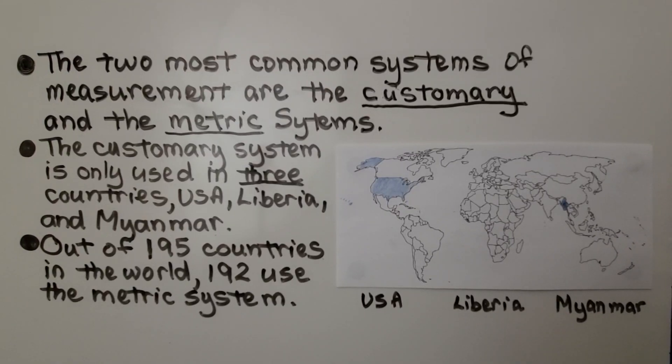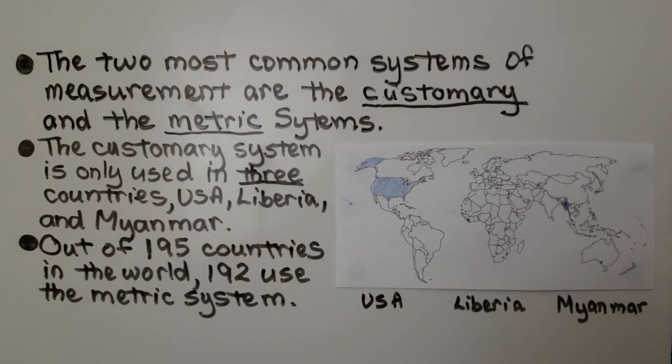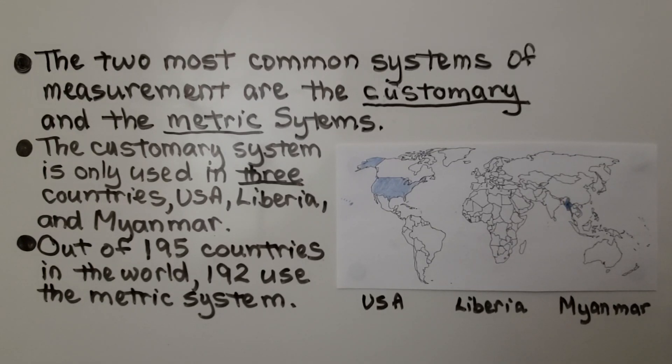Did you know that the two most common systems of measurement are the customary and the metric? And did you know the customary system is only used in three countries: USA, Liberia, and Myanmar? Out of 195 countries in the world, 192 use the metric system.